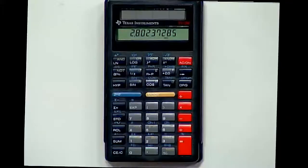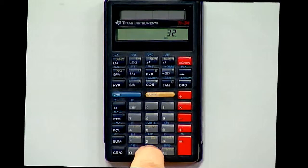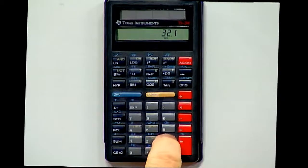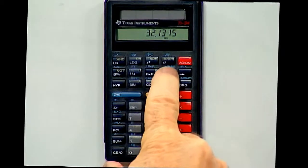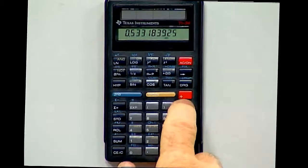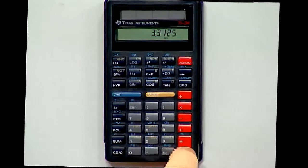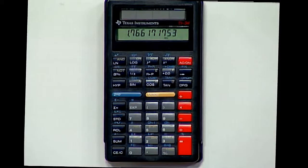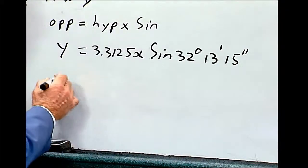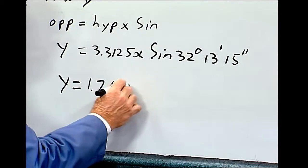Let's go to the calculator. Here, 32.1315 decimal degrees sine times 3.3125 equals. And that equals 1.7662. So y equals 1.7662.